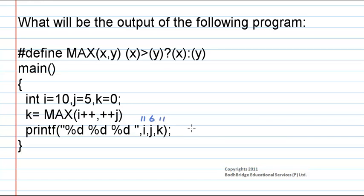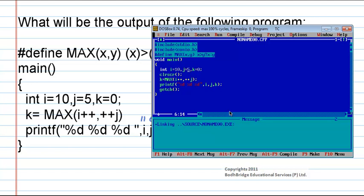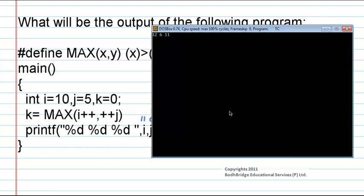So i is 11 and j is 6 and the value of k is also 11. Now this will be the output of the program. Let us check if our output is correct. This is the program. If we compile it we have got 0 errors and when we run the program the result is 12, 6, 11. How did we get 12 as the value of i? Let us check.